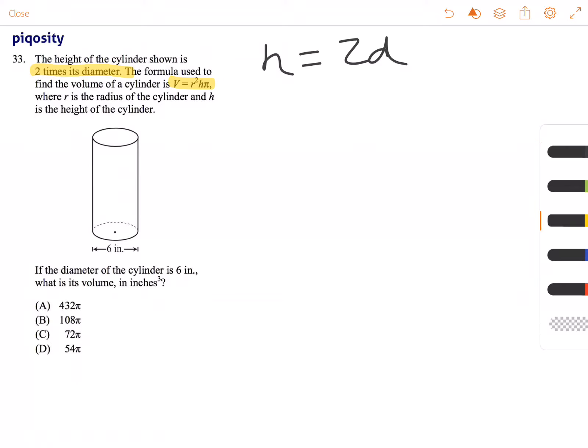If you continue on, if the diameter of the cylinder is 6 inches, what is its volume in inches cubed? We now know the diameter is 6 inches, so let's figure out the height.